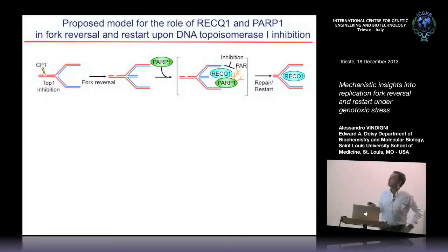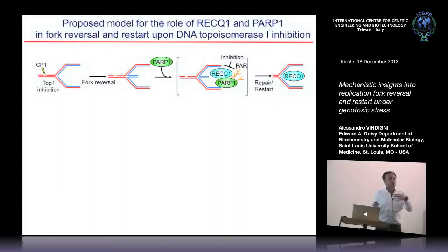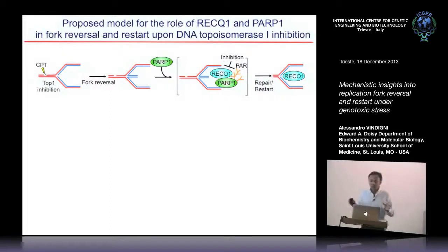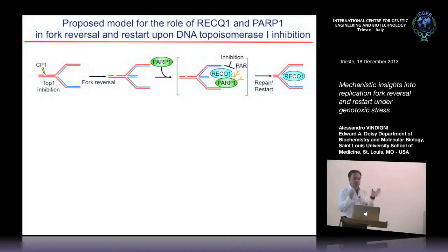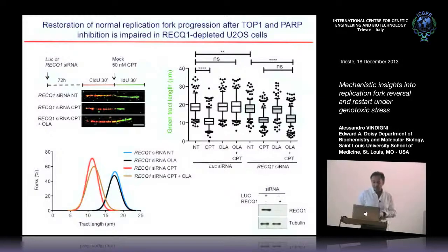From these studies, we proposed a model: RECQ1 is the factor important to restart reverse forks, and PARP's role is not to drive their formation but to inhibit RECQ1 — preventing premature restart before the lesion is repaired. We needed cellular evidence to support this model, and the next experiments were done mainly by Saravana, who went to the lab of Raimundo Nut in Seattle to learn DNA fiber technology for monitoring replication dynamics genome-wide.